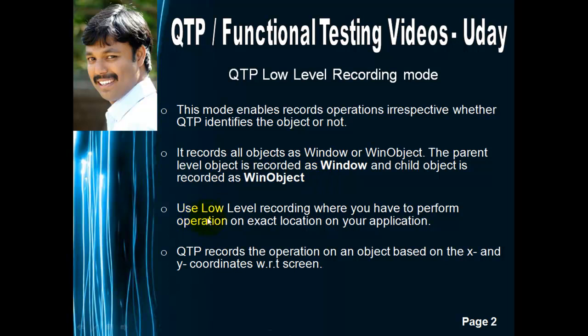The third point is that low level recording records operations based on the exact location on your application — meaning the X and Y coordinates with respect to the screen. So if you want to perform an operation at an exact location, QTP records it based on those X and Y coordinates with respect to the screen.